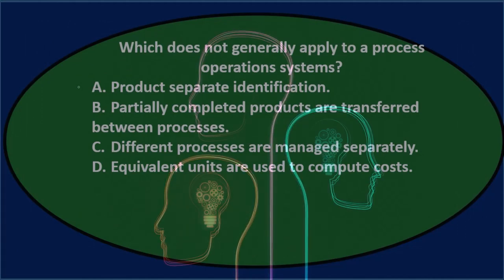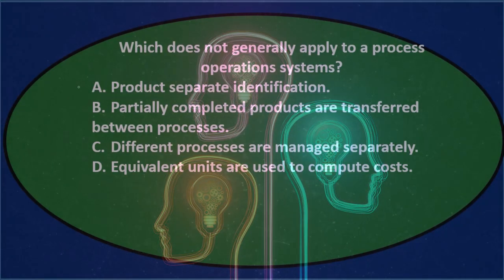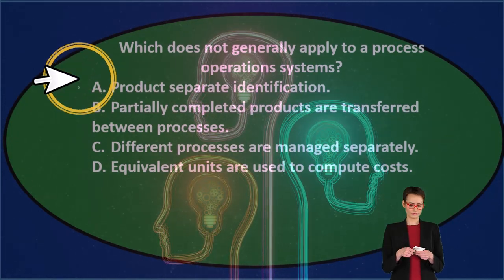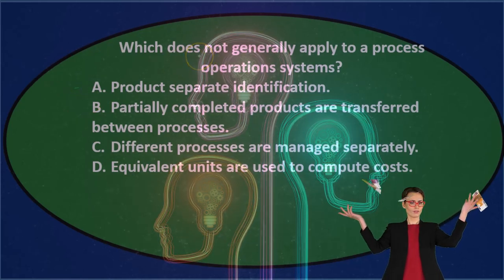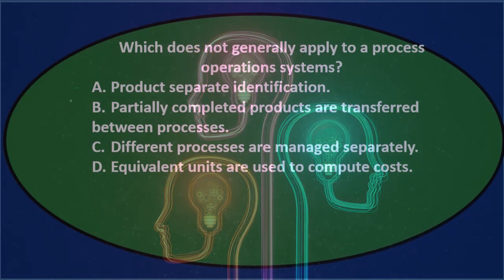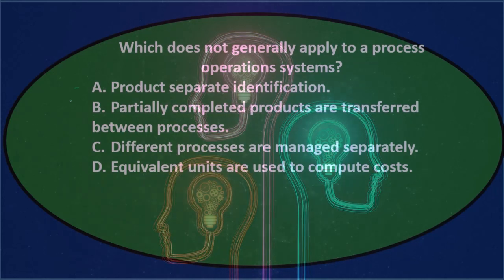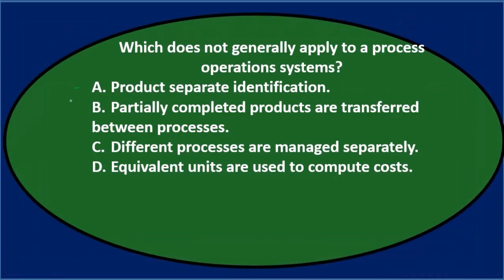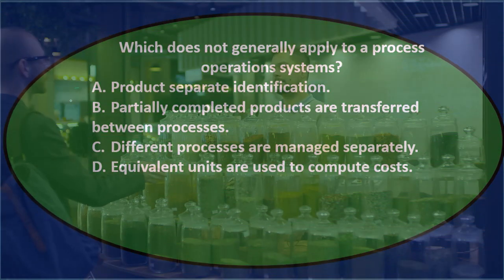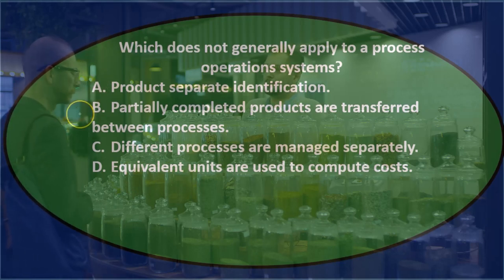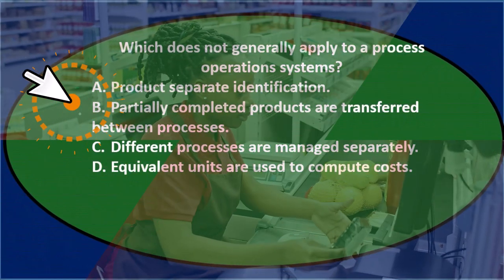We'll go through these characteristics to see if we can cross anything out. In a process cost system, we're tracking things as they go — all items are typically the same — as opposed to a job cost system which applies costs to a particular job. Product separate identification — option A — I would think applies to a job cost system, not a process cost system, so that's a candidate.